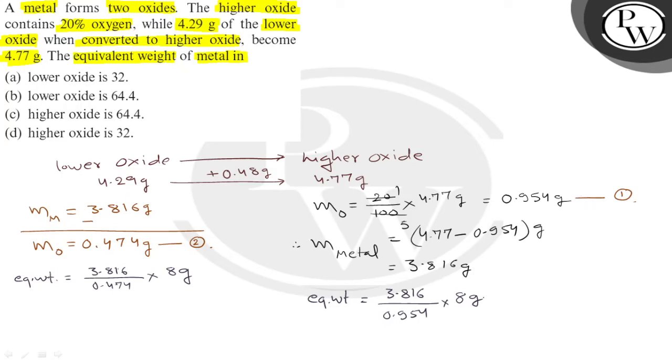Equivalent weight of metal is 64.4 gram in lower oxide, this is answer 1. As far as second case is concerned, 3.816 into 8 divided by 0.954, it gives us equal to 32.